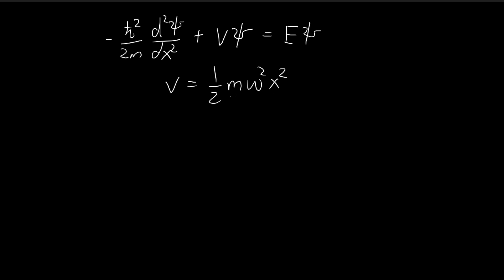So first of all, if you're wondering why we express this potential in this way, it's because if you look back at the classical example of a harmonic oscillator, you have our spring constant.